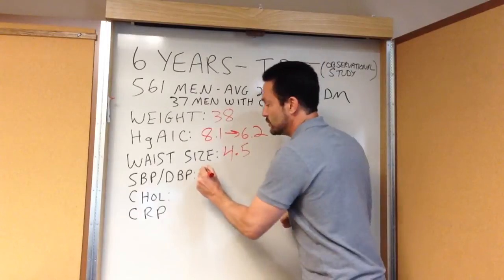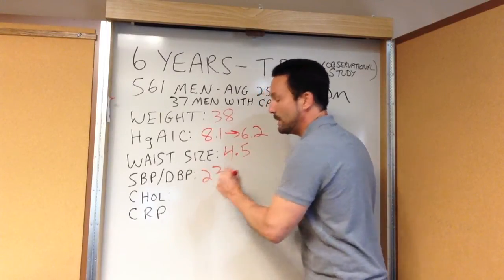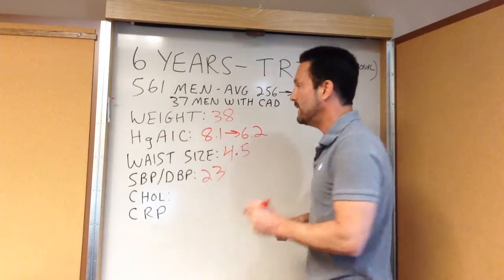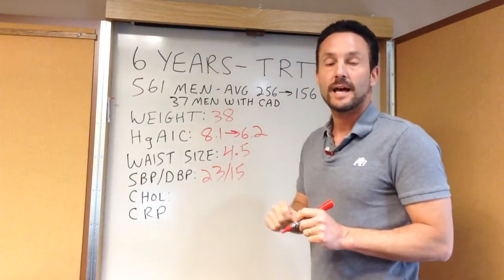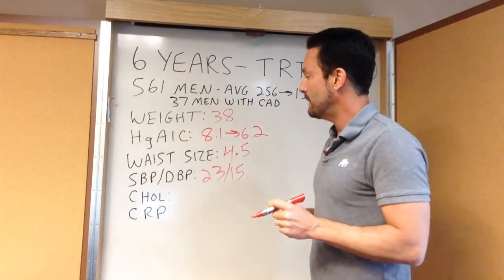Systolic blood pressure dropped an average of 23 points on testosterone therapy. Diastolic blood pressure dropped an average of 15 points on testosterone therapy, not on additional medications.